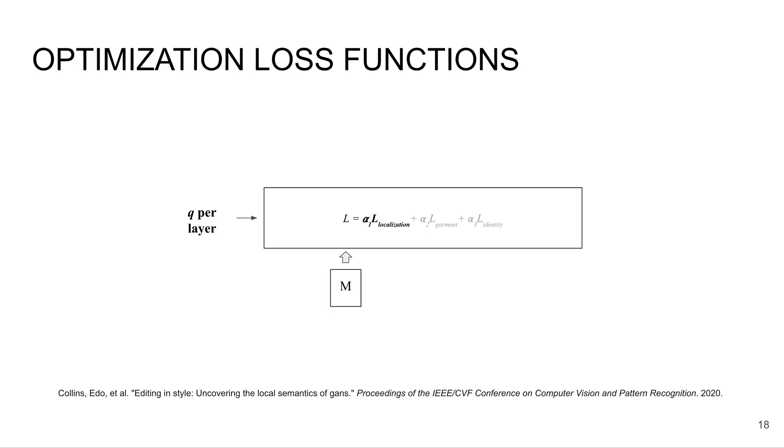This loss takes in two inputs. The first are the interpolation coefficients, which we denote q. And the second is this value m, which measures the spatial overlap between activation tensors in the network and semantic regions, which we get from segmentations. And we measure this loss by seeing whether we're interpolating within semantic regions that we want to change.